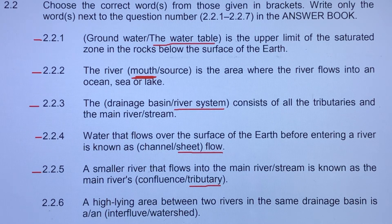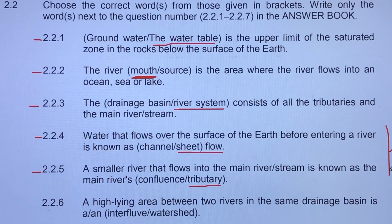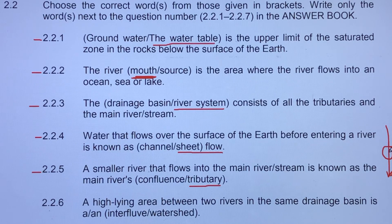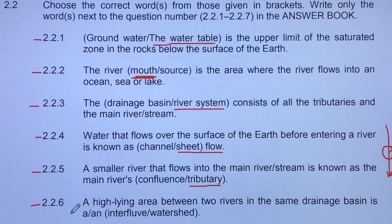To illustrate: if this is the tributary and this is the mainstream — water inside the tributary flows into the mainstream moving downward — at that particular point where they meet, you find the confluence. A confluence is that specific point where the water bodies of the tributary meet the water bodies of the mainstream.